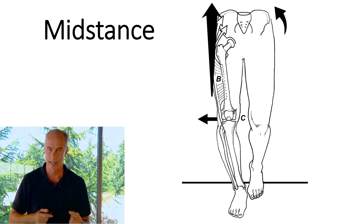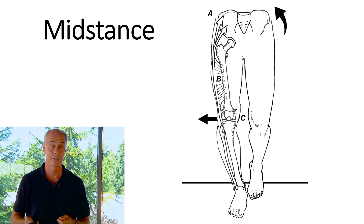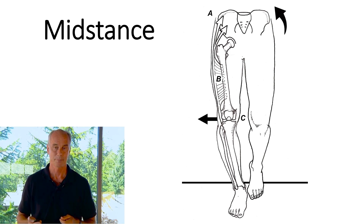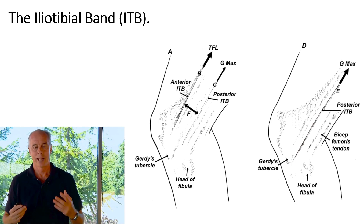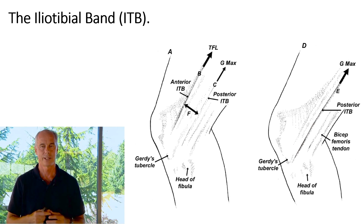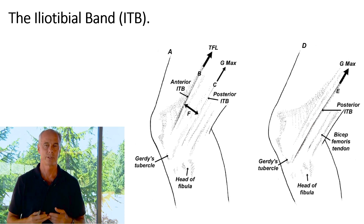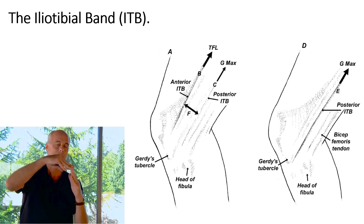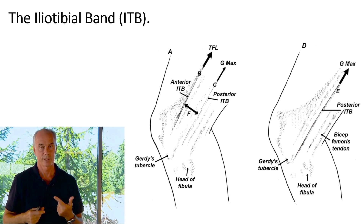The iliotibial band travels down and protects the medial knee and femur from bending. We were always taught that when the knee hits 28 degrees, the band jumps over the epicondyle and irritates the bursa — snapping back and forth as you run. But great new research by Fairclough and Falvey showed that the band never jumps back and forth and never irritates the bursa.